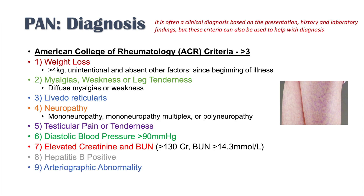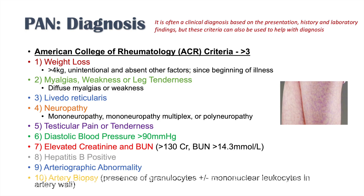The ninth criterion is an arteriographic abnormality — something odd seen on imaging. The tenth is an artery biopsy showing presence of granulocytes, plus or minus mononuclear leukocytes, in the artery wall. These are the 10 ACR criteria. It's all in the context of the clinical presentation with no other known conditions causing these findings — if nothing else explains it and you're seeing many of these criteria, it may be a polyarteritis nodosa diagnosis.